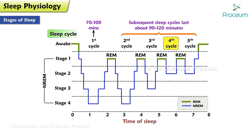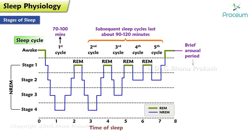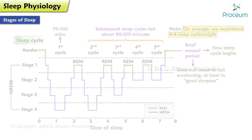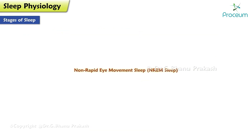During each cycle, we transition from non-rapid eye movement sleep to rapid eye movement sleep before experiencing a brief arousal period. This brief arousal does not result in a full awakening, at least in good sleepers. After the brief arousal, a new sleep cycle begins. On average, we experience four to six sleep cycles per night.